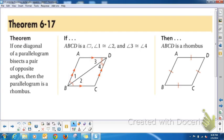Also, theorem 6-17: if one diagonal, so you only need to know one, of a parallelogram bisects a pair of opposite angles, then the parallelogram is a rhombus. So if you know one diagonal bisects a pair of opposite angles, then you know it's a rhombus.